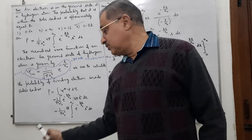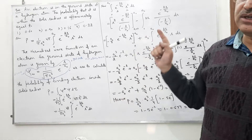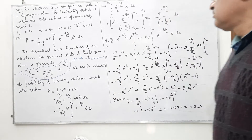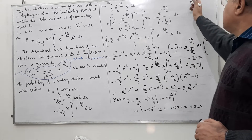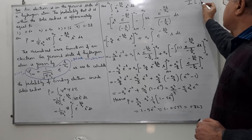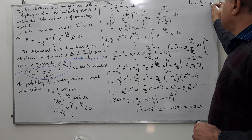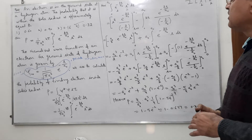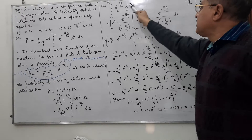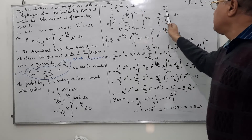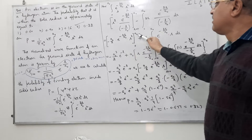The 4π constant is taken outside the integration. Now we solve the integration using integration by parts, where the limit goes from 0 to a₀. The algebraic function comes first and the exponential function comes second in integration by parts.